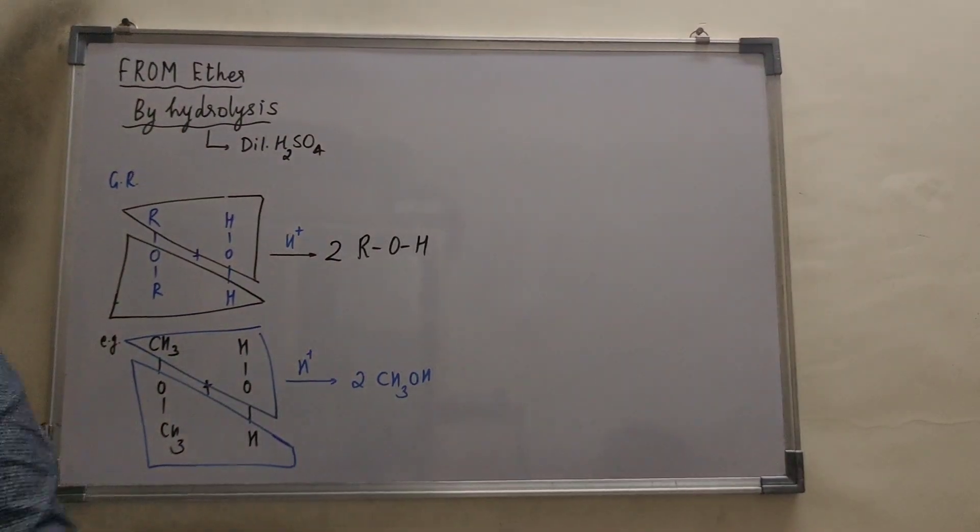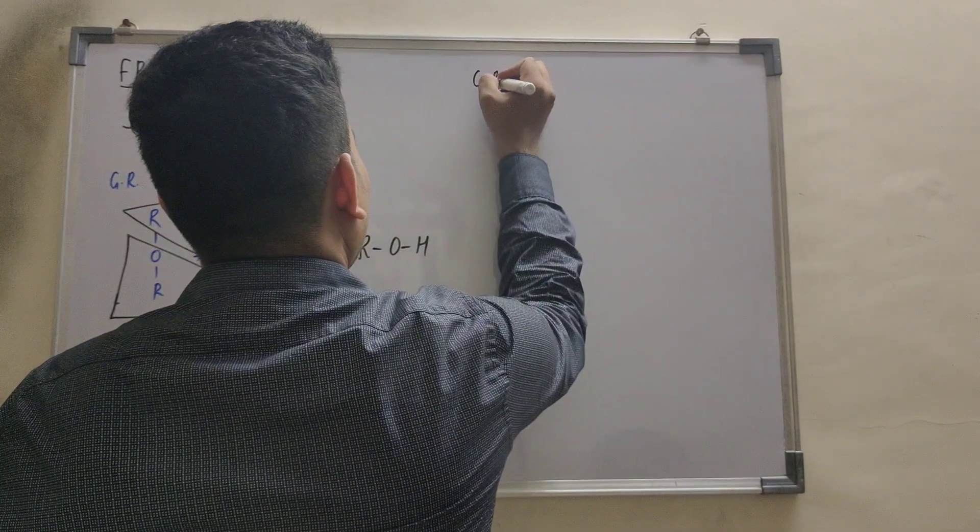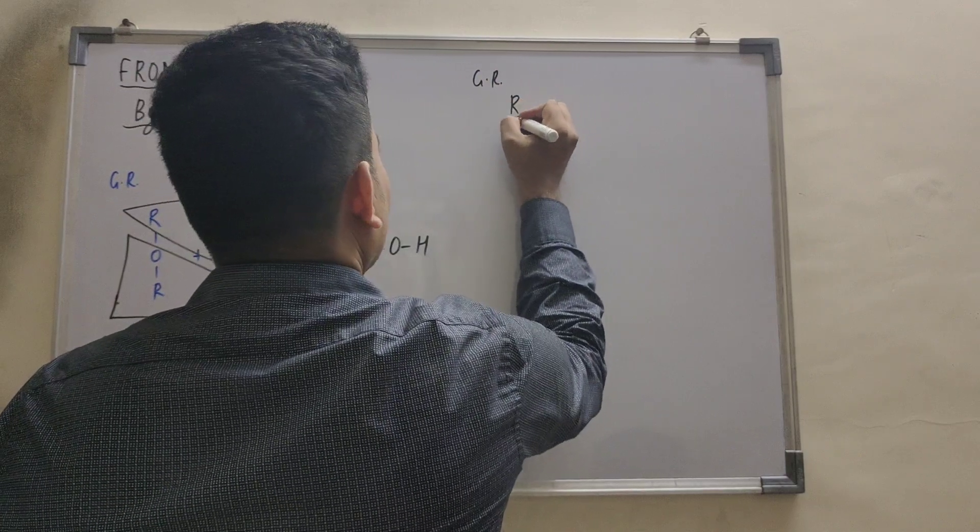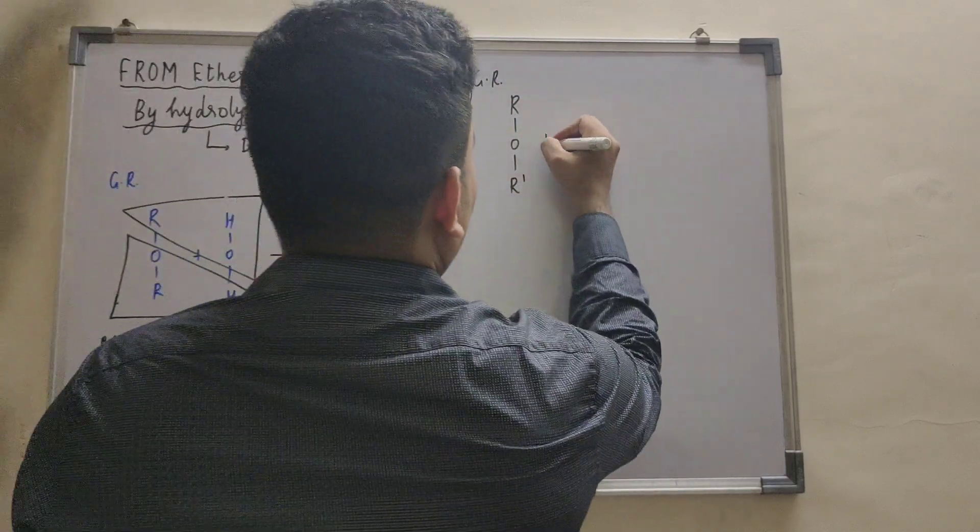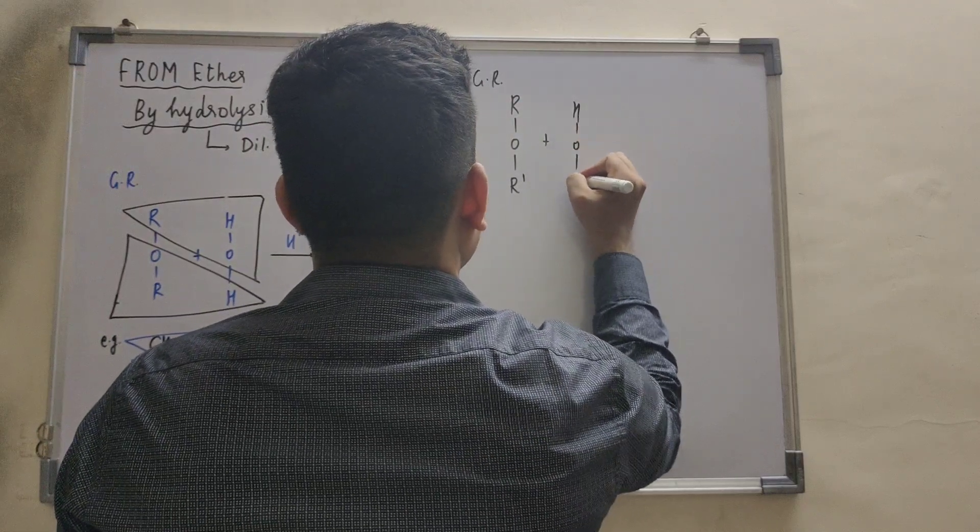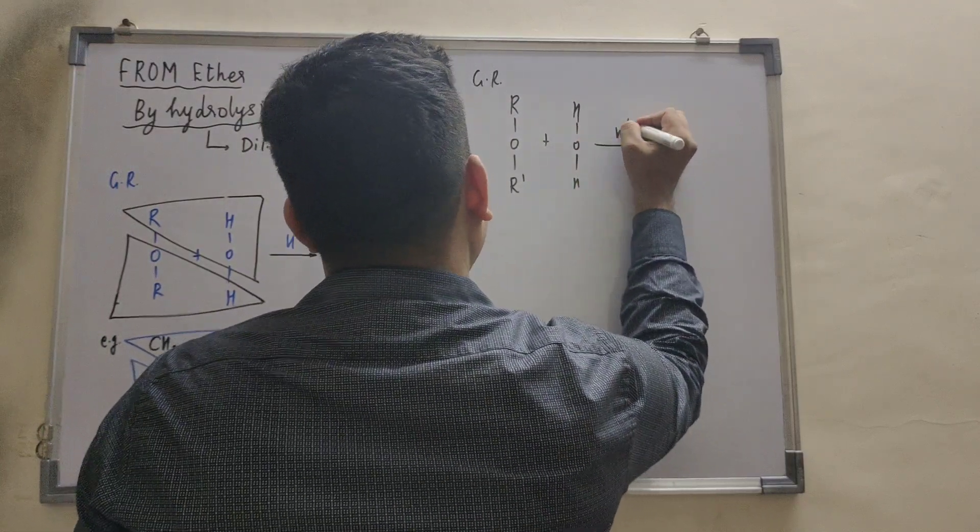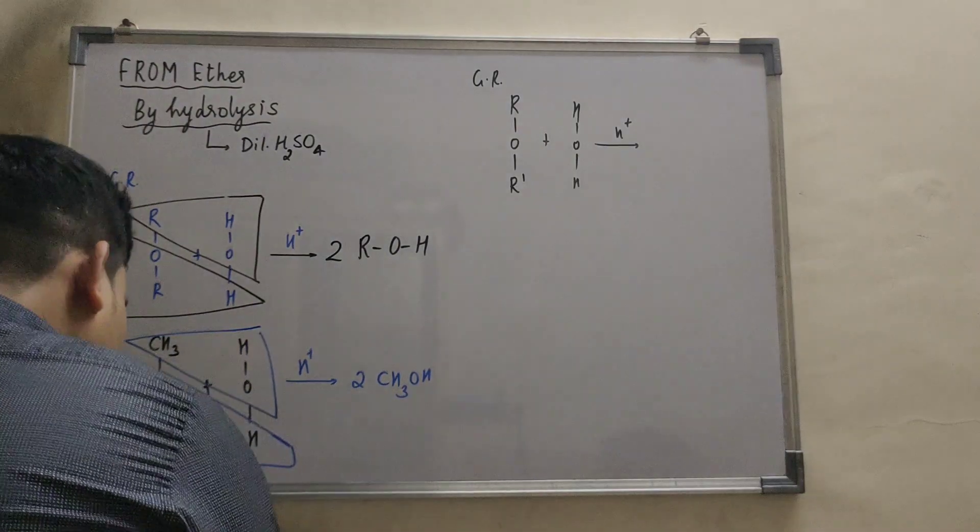Now, let's see general reaction number 2 where unsymmetrical ether is used, R-O-R' dash. When it undergoes hydrolysis in the presence of dilute H2SO4, H+, what it gives?